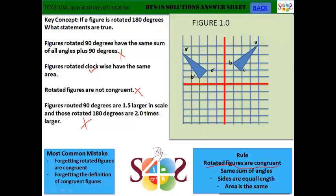And here in the rules we have rotated figures are congruent, meaning that they have the same angles, the same equal lengths, and the area is the same. So this statement is false.